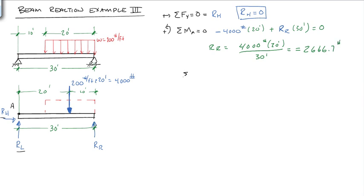Now we'll use sum of the forces in the Y direction equals 0, up being positive. We get RL minus 4,000 pounds plus RR equals 0. So RL is equal to 4,000 pounds minus 2,666.7 pounds,